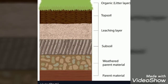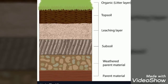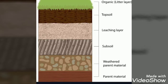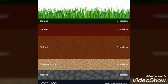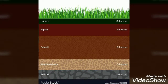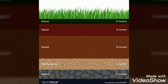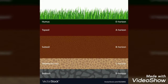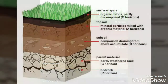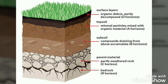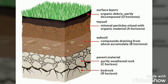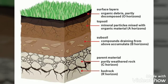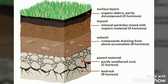Humus consists of leaf litter and other decomposing organic materials such as dead animals and plant material. Topsoil is humus mixed with mineral particles — this is where plant roots grow. Subsoil is mostly sand, silt, and clay near the bottom. And the bottommost layer is bedrock, which is the parent material for soil once it reaches the surface.